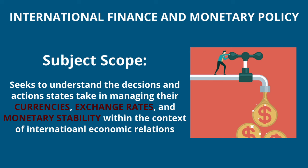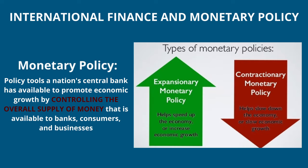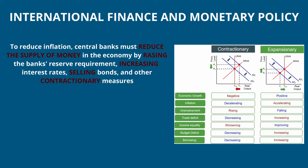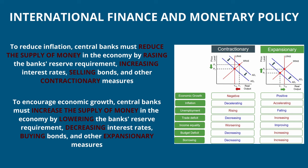Monetary policy is where it gets a bit more interesting. Monetary policy is the set of tools countries can use to control the money supply — the total amount of money in the economy — in order to promote economic growth and employment, and keep inflation in check. So if the government wants to reduce inflation, it needs to reduce the money supply by selling bonds and increasing interest rates. On the other hand, if the government wants to encourage public spending, it needs to buy back bonds or lower interest rates to pump money back into the economy and encourage lending.